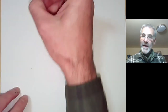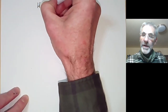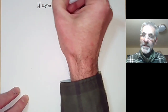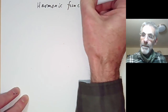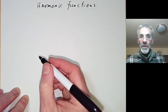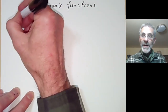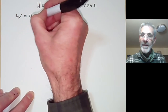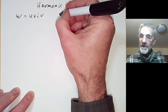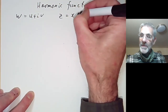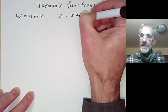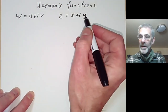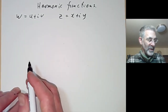This lecture is part of an introductory undergraduate course on complex analysis and will be about harmonic functions. We recall from last lecture we were looking at a complex function w, which we can write as u plus iv, of a complex variable z which we can write as x plus iy. So u, v, x, and y are real, and z and w are complex.